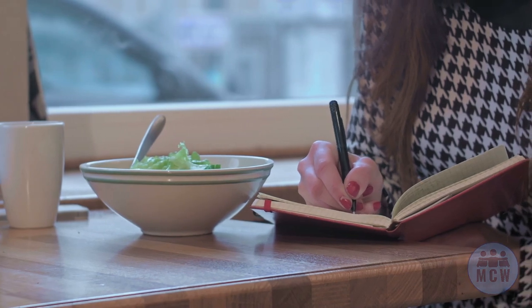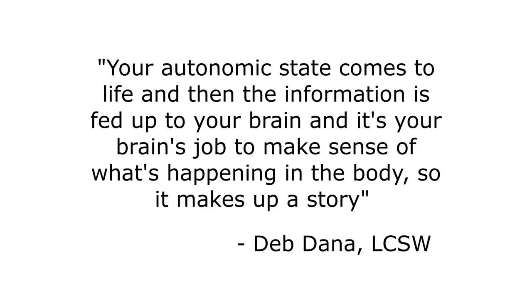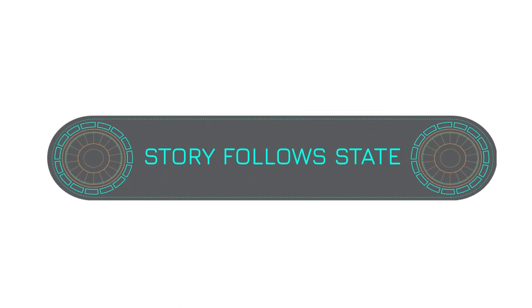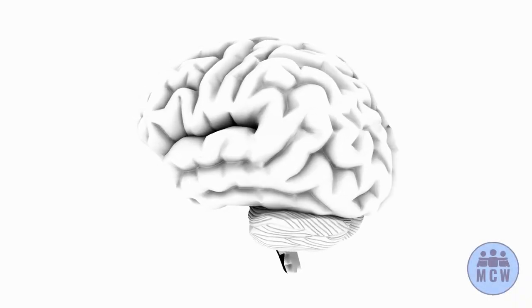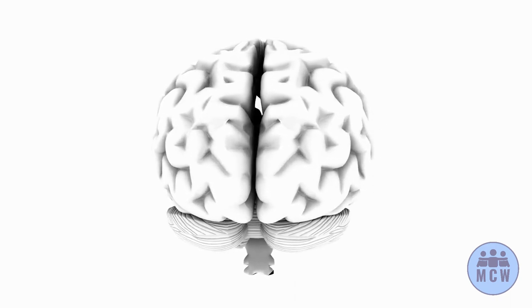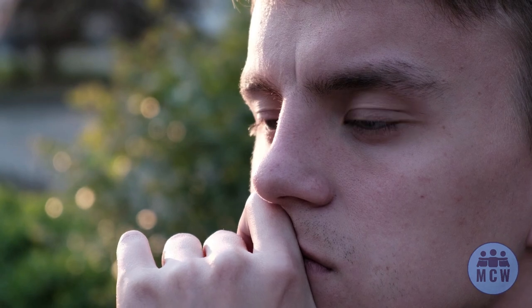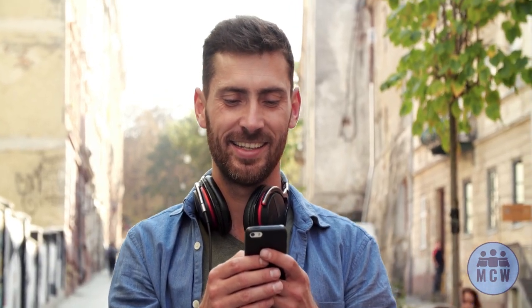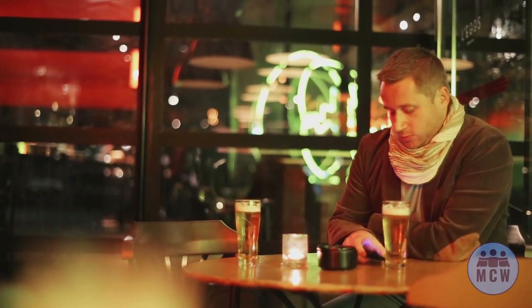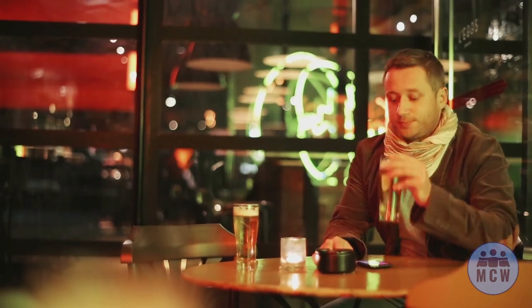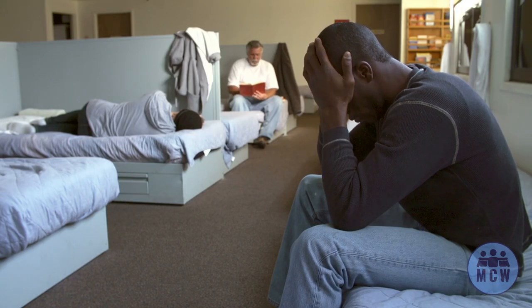A Deb Dana, LCSW quote: 'Your autonomic state comes to life and then the information is fed up to your brain, and it's your brain's job to make sense of what's happening in the body. So it makes up a story.' Story follows state. When we shift up and down the polyvagal ladder, our brains create a narrative to explain why — examples include 'I deserve it,' 'I shouldn't have been there,' or 'I'm angry because student X was staring at me.' The thoughts we have reflect our autonomic state: in safe and social, thoughts are more compassionate and calm; in fight and flight, thoughts are anxious and angry directed outward; in shutdown, thoughts are more inward.